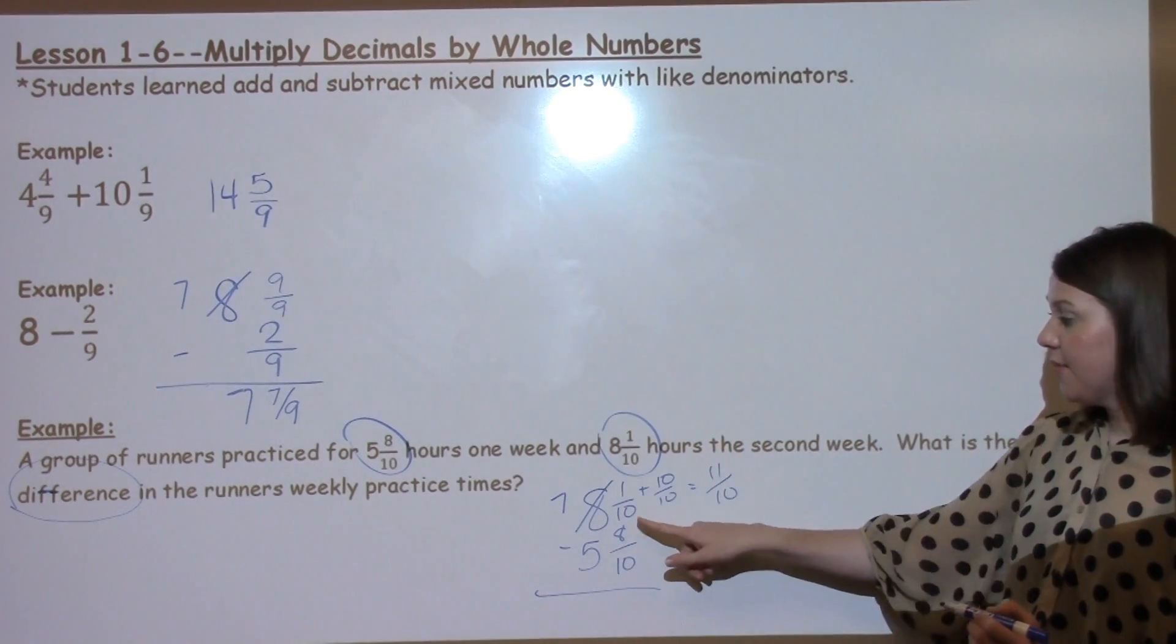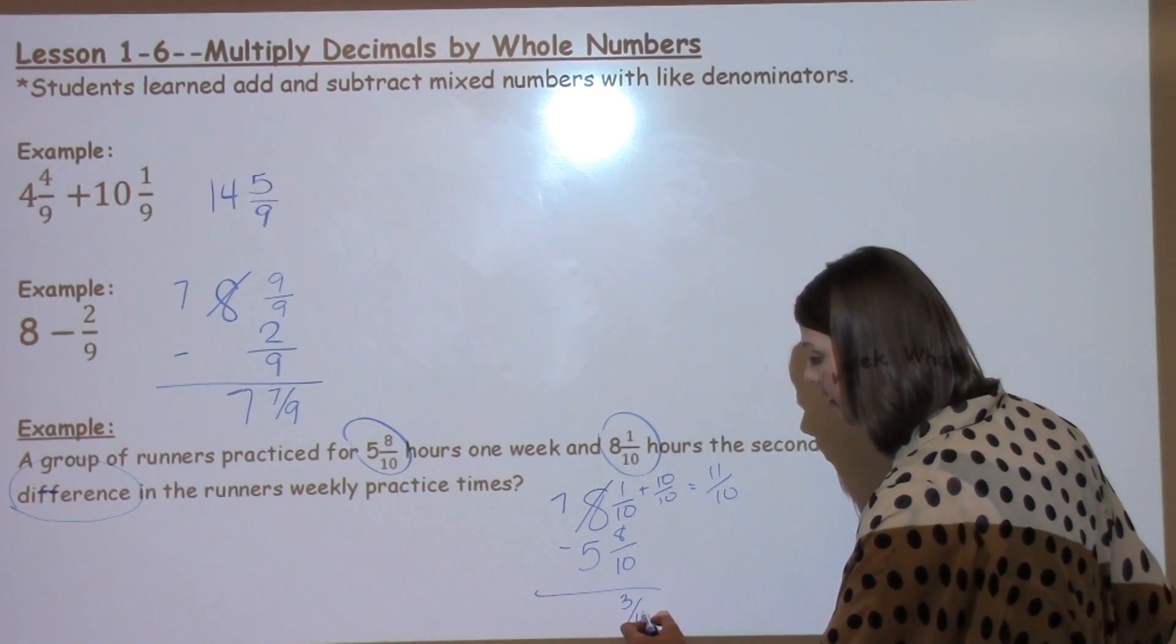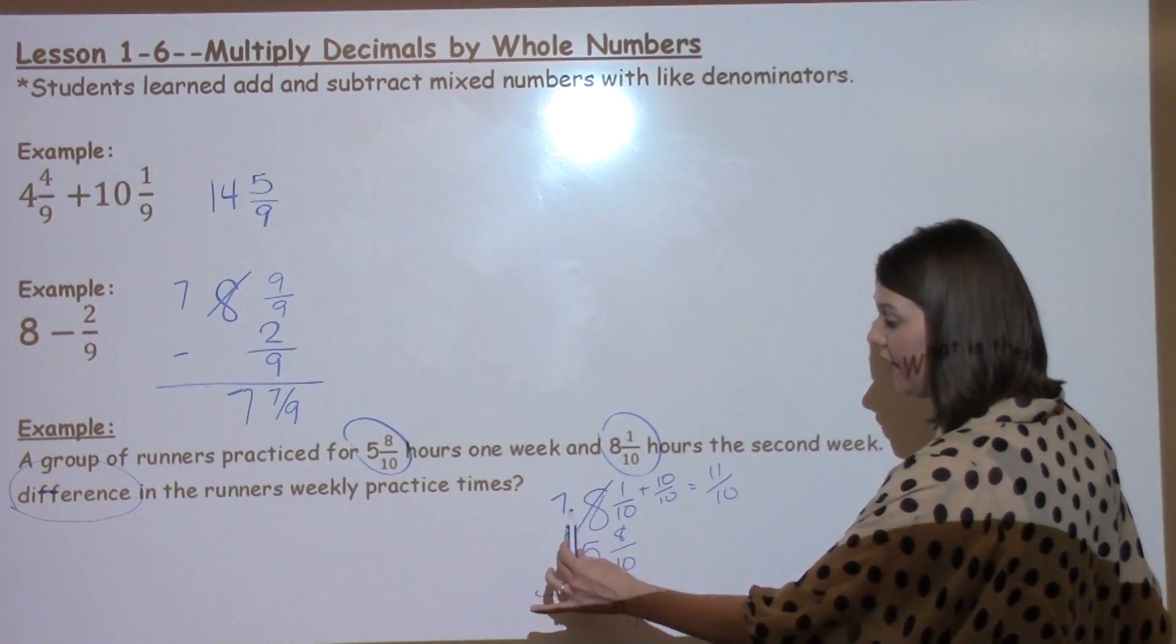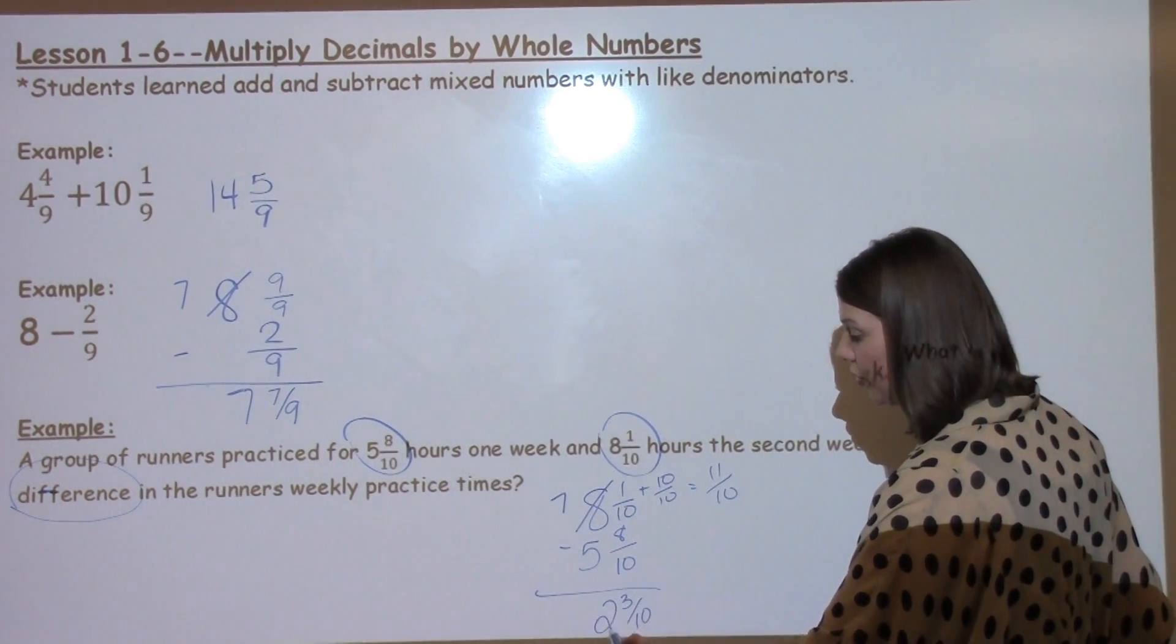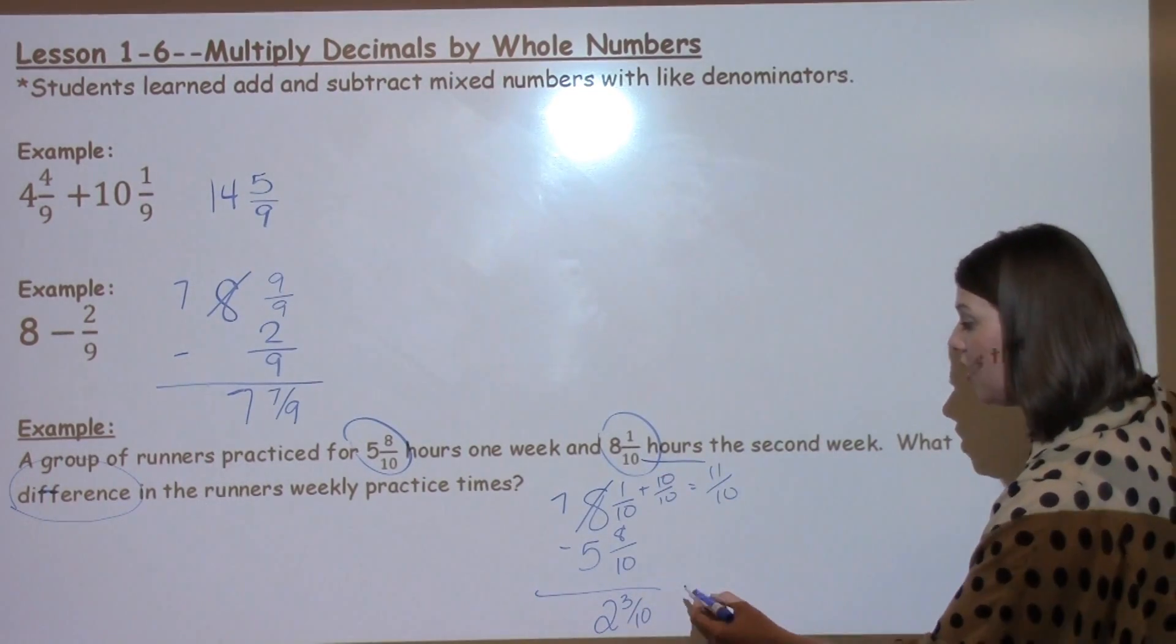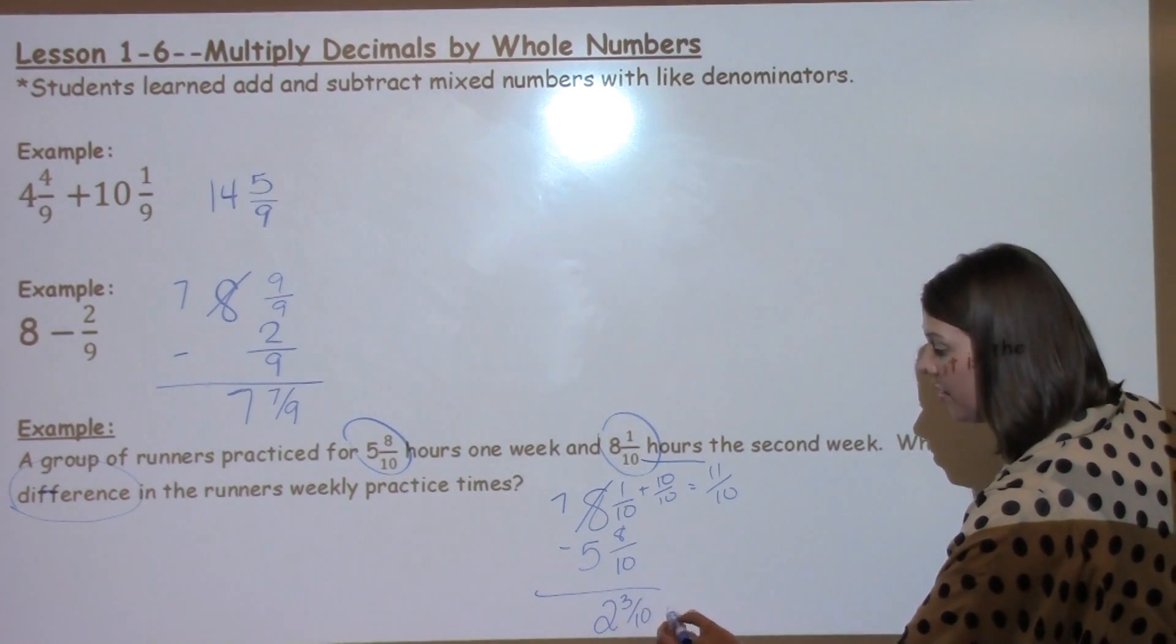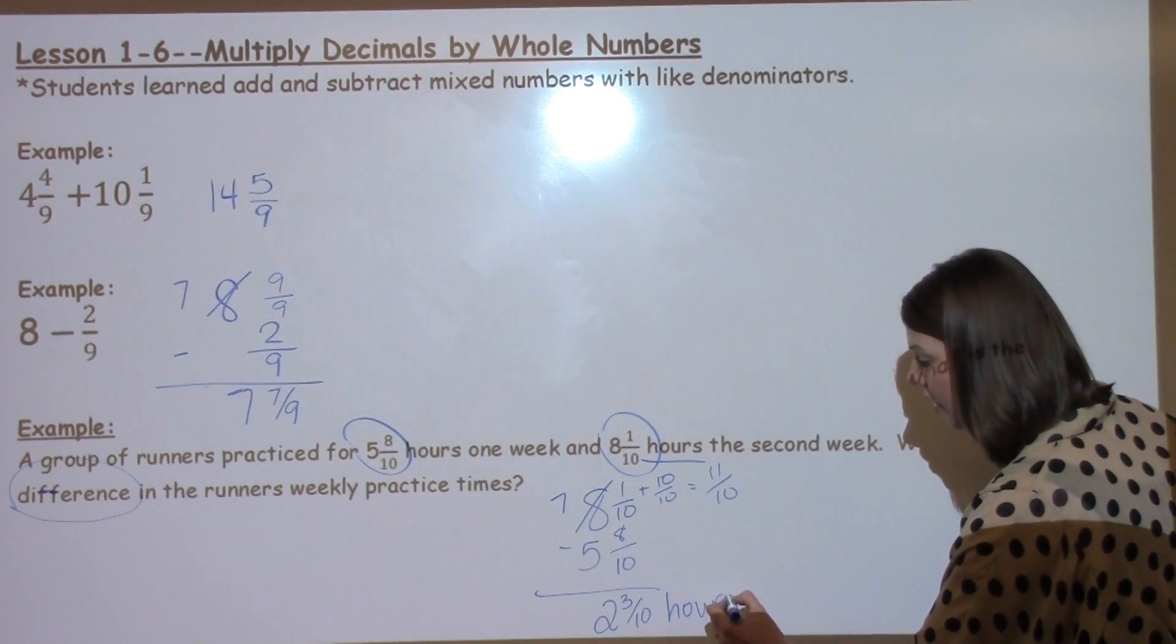When I take my 11 tenths minus my 8 tenths, I get 3 tenths. If I take 7 minus 5, I get 2. So I've got 2 and 3 tenths. My label in this case is going to be hours. So the difference in the weekly practice times for the runners was 2 and 3 tenths hours.